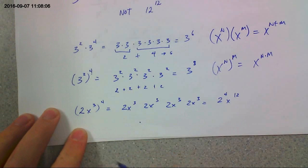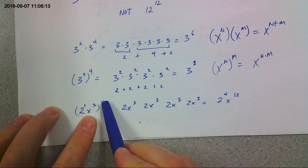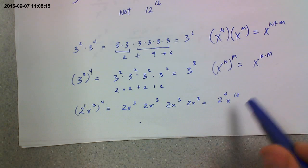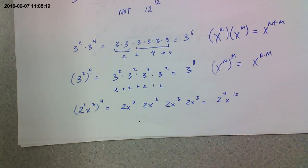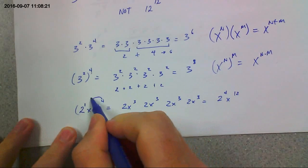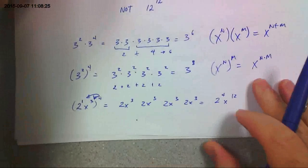Now, this one right here is the same thing. The thing is there's a 1 that's an invisible exponent for that 2. So I actually have 4 2's multiplying, and I have 4 x cubed's multiplying, which makes 12 x's and 4 2's all multiplying. So the shortcut would be kind of like you multiplying those exponents together, everything in the parenthesis. All right, moving on.